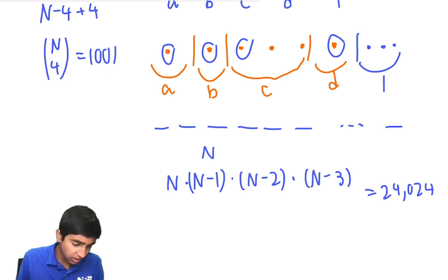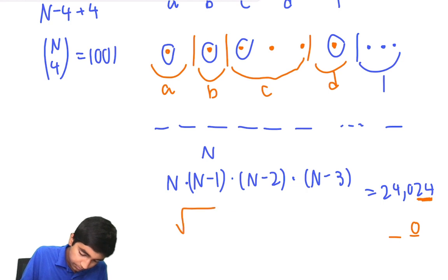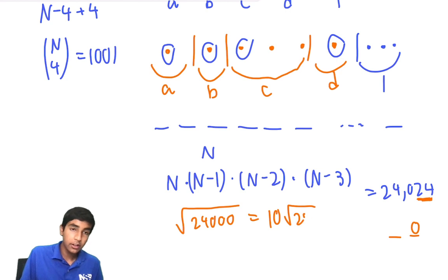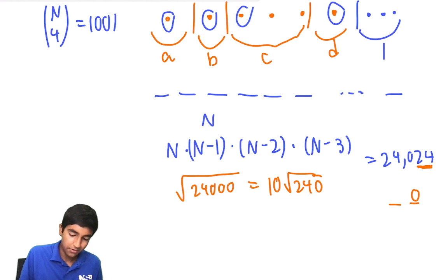And if we take the fourth root of this, or let's just take the square root for now, the square root of 24,000 is just 10 times the square root of 240. And if you know your squares, you know that 15^2 is 225, 16^2 is 256, so it's about 15.5-ish. So let's just say this is about 155 roughly.